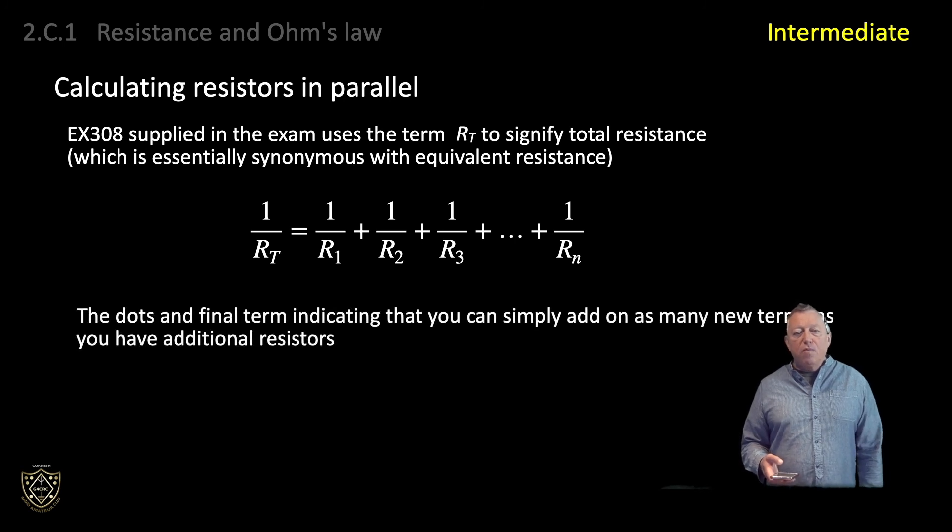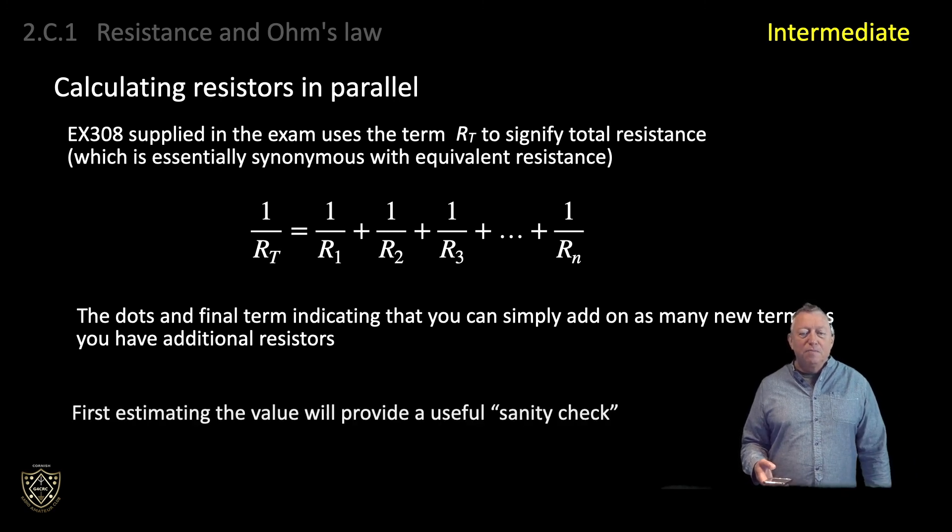EX308 supplied in the exam uses the term RT to signify total resistance, which is essentially the same as equivalent resistance. The general formula for resistors in parallel is shown here. The dots and final term indicate that you can simply add on as many new terms as you have additional resistors. A very common mistake when using this reciprocal formula is to evaluate the right-hand side of the formula and think that you have arrived at the answer, when in fact you have evaluated 1 over RT, in other words, the reciprocal of RT. A further calculated keystroke, the 1 over X button, is needed to get to the final answer. Estimating the value will provide a useful sanity check and perhaps remind you that this final keystroke is required.